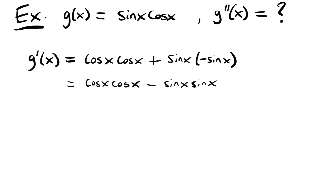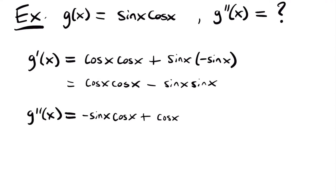When we take the second derivative of this, we're going to have two product rules — one for cosine x cosine x, and one for sine x sine x. g double prime of x equals the derivative of the first pair minus the derivative of the second pair. For cosine x cosine x: the derivative of cosine x is negative sine x, times the original second function cosine x, plus the original first function cosine x times the derivative of the second, which is negative sine x. Then for the second product rule, we subtract: derivative of sine x, which is cosine x, times sine x, plus sine x times the derivative of sine x, which is cosine x.